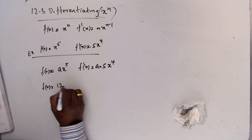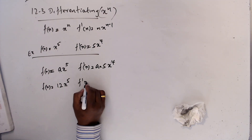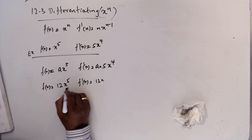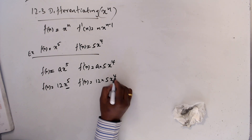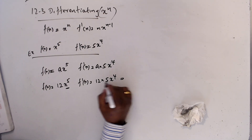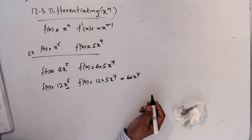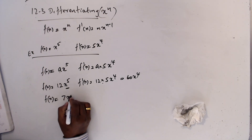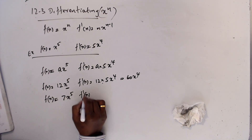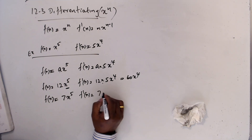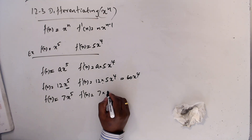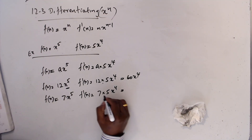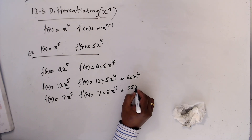If f(x) = 12xʸ, then f'(x): keep 12 aside. What is the differentiation of xʸ? It is 5·x⁴. Then simplify: 12 times 5 is 60·x⁴. Similarly, f(x) = 7·x⁵: keep 7 aside, differentiate x⁵ to get 5·x⁴, then 5 times 7 is 35·x⁴.